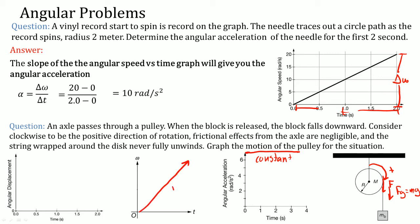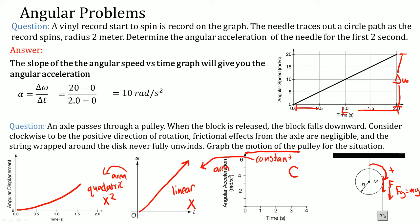Since the angular acceleration is constant, the angular velocity graph is linear. Going backwards by taking the area, the angular displacement becomes a quadratic — an x-squared term. So the angular displacement changes like a quadratic, the angular velocity is linear, and therefore the angular acceleration is constant. You go backwards using area; if you want to go forwards, you take the slope — or in calculus, the derivative.